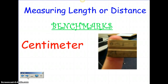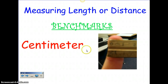Let's go over some benchmark measurements for measuring length or distance. A centimeter is about the distance across the tip of a finger. As you can see in the picture, that's about one centimeter. Everybody's body is different, but if you ever want to know what a centimeter is, look at your index finger and look at how wide across it is.